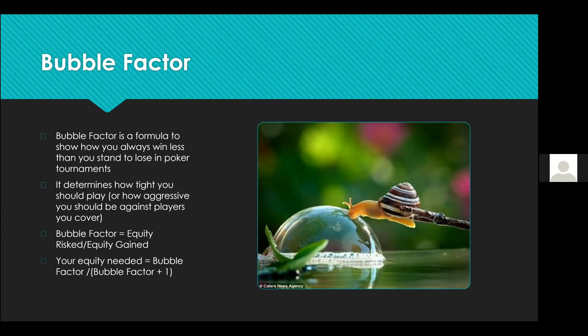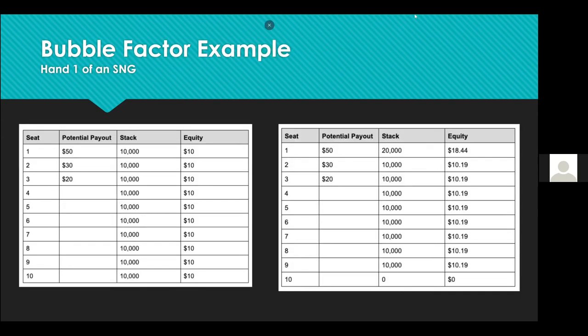Bubble factor can never be less than one. At the start of a tournament it will be very slightly over one for everybody, but as you get near the final table or the actual bubble it will escalate. How high your bubble factor is depends on your stack — short-stacked it'll be higher than when you're chip leader. For example, if your bubble factor is 2, you'll need 2/(2+1) = 66.6% equity to call an all-in, rather than the 50% that would apply in a chip-only context. Here's an example from hand one of a sit-and-go.